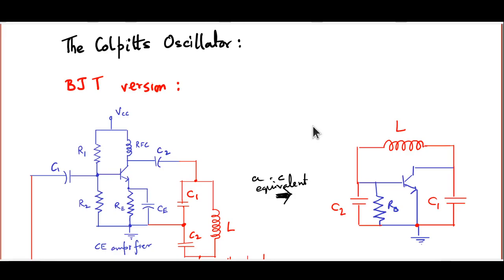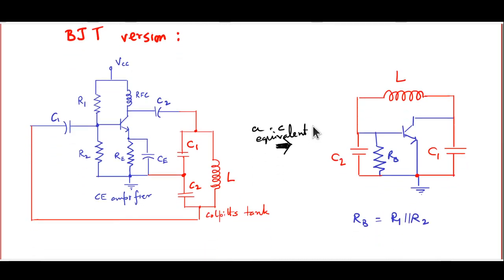Let us now discuss the Colpitts oscillator constructed using a bipolar junction transistor. The portion drawn in blue is a standard common-emitter amplifier with potential-divider bias. C1 and C2 are blocking capacitors, and there is a bias-stabilizing resistance RE bypassed using CE, so that at AC frequencies it is shorted to ground.